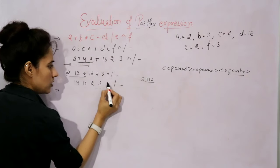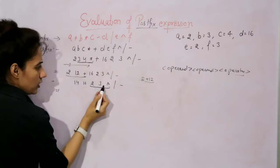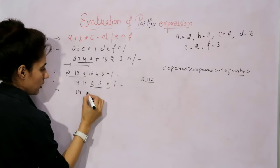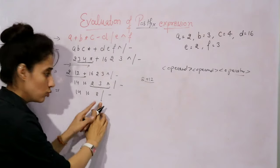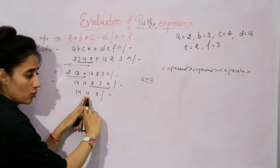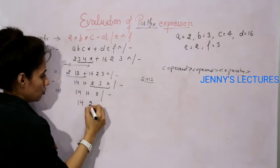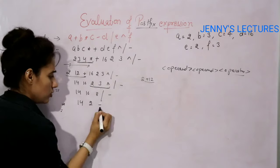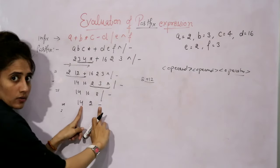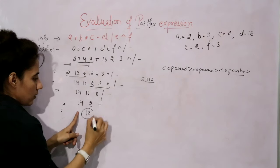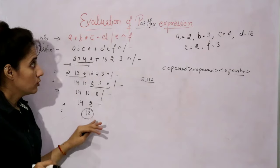In another scan, the first operator found is the exponent. For this operator, the immediate previous two operands are two and three — two raised to power three equals eight. Now the expression is: 14, 16, 8, divide, minus. In another scan, the first operator is divide — operand one is 16, operand two is 8, so 16 divided by 8 equals 2. Expression is now: 14, 2, minus. In another scan, the first operator is minus — 14 minus 2 equals twelve. The answer is twelve, same as before.